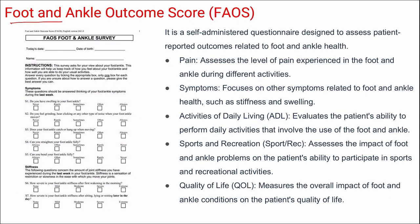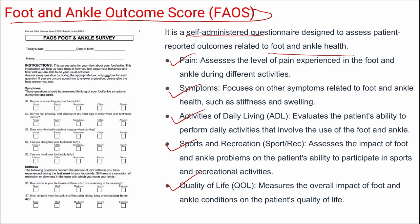Next is the Foot and Ankle Outcome Score (FAOS) — a self-administered questionnaire assessing patient outcomes on foot and ankle health. Similar to KOOS, FAOS also has the domains of pain, symptoms, activities of daily living, sports and recreation, and quality of life. Scores are obtained based on the Likert scale responses.